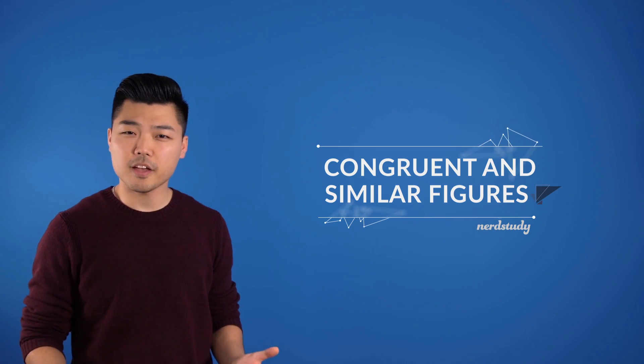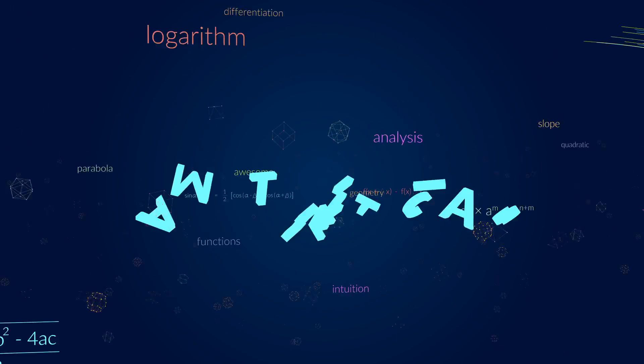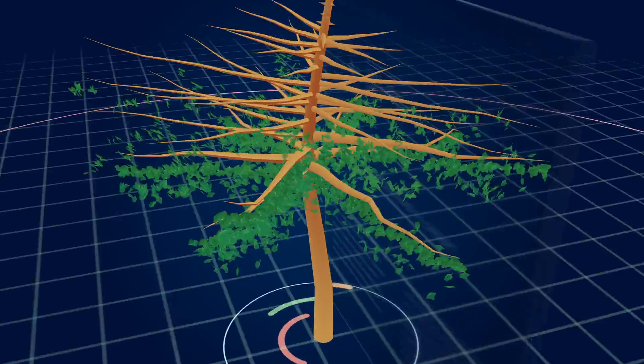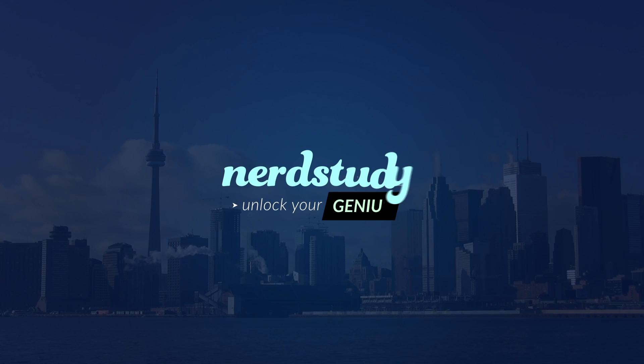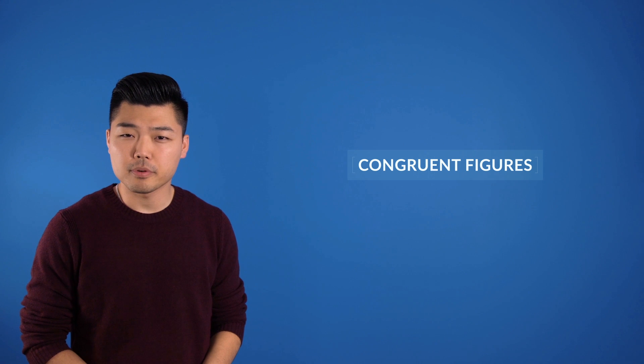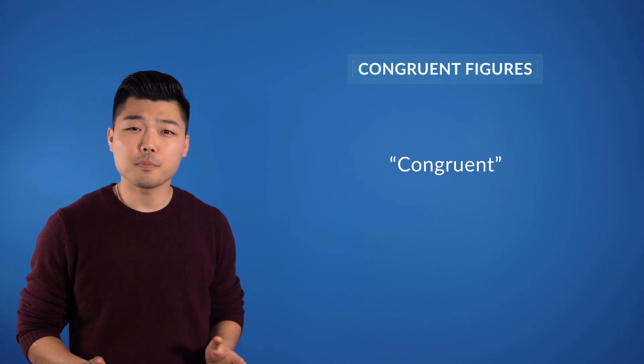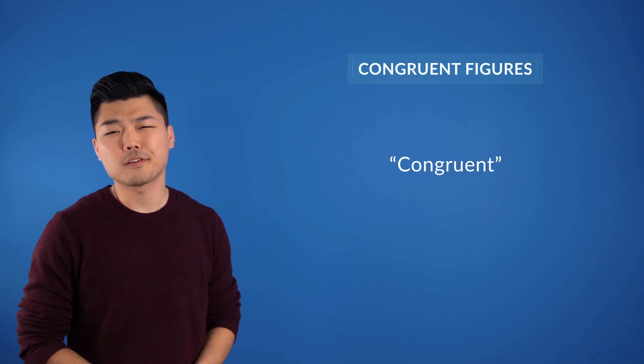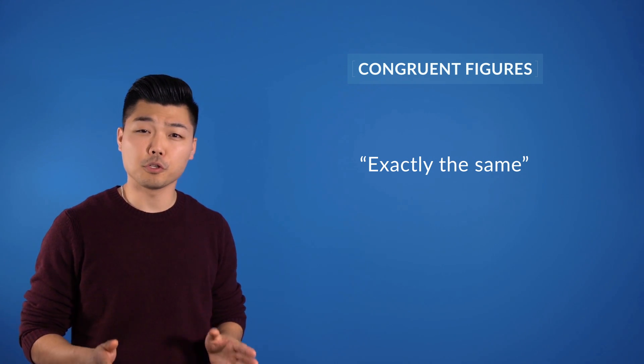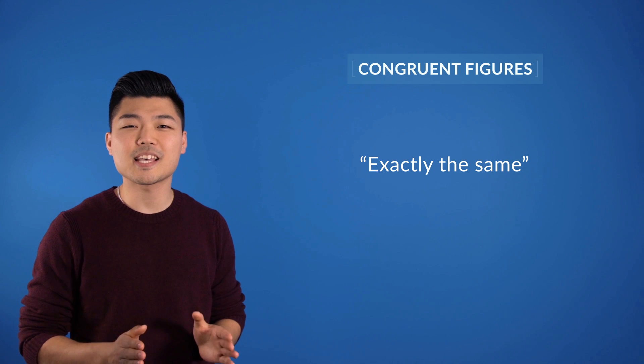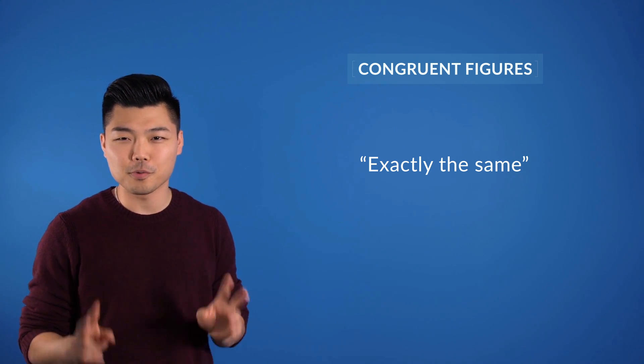Let's learn about the differences between congruent figures and similar figures. Congruent figures are identical in their shape. The word congruent can be replaced with a phrase like exactly the same. Not only is the general shape identical, the sizing itself is also congruent.